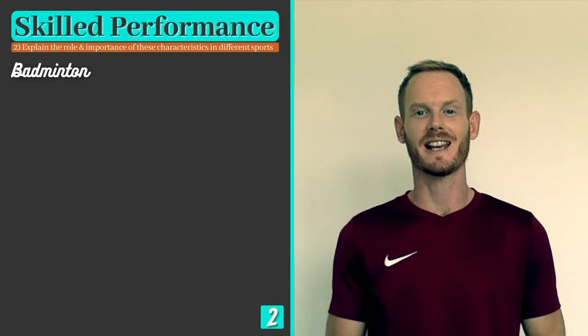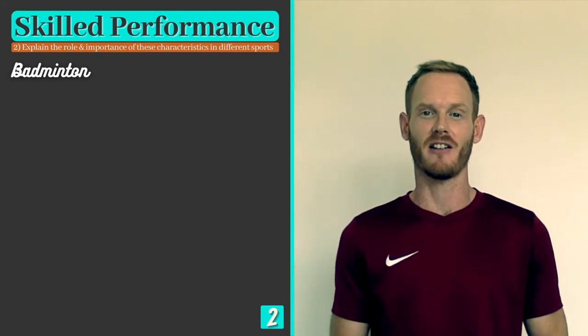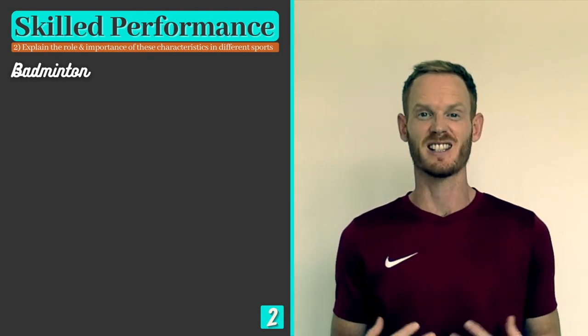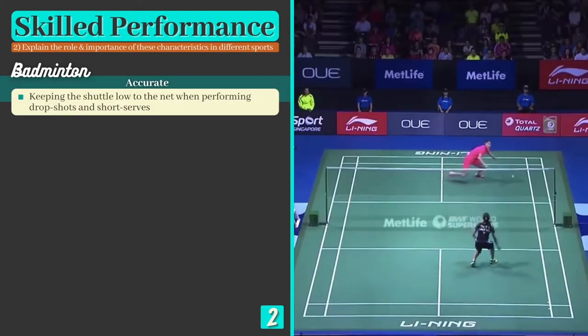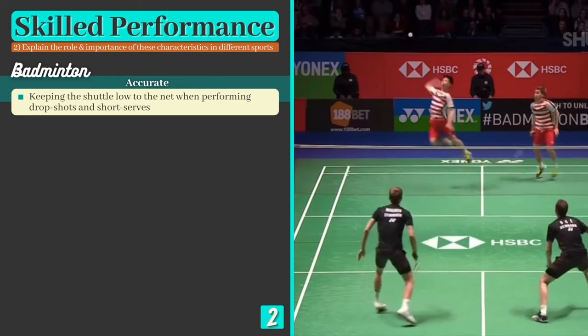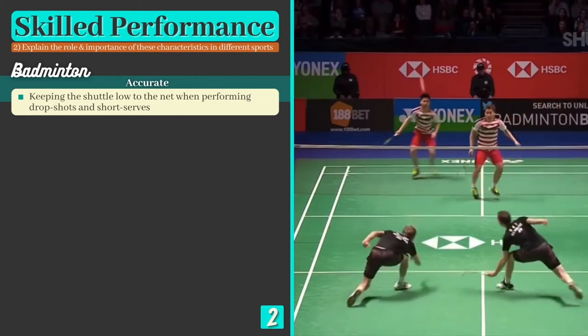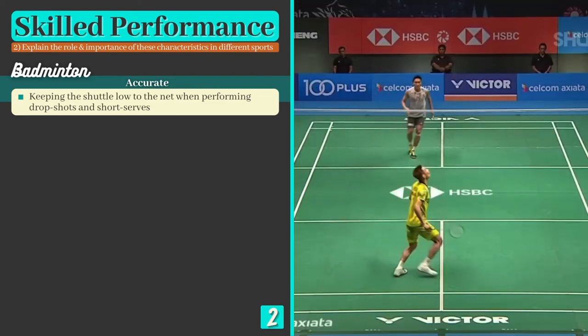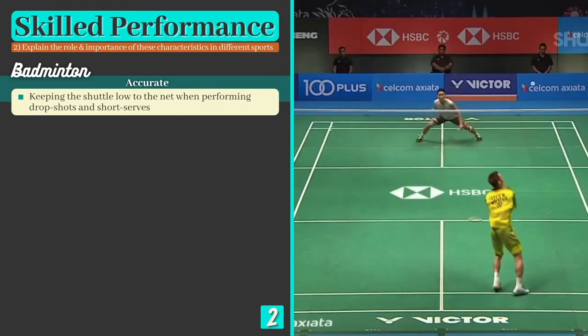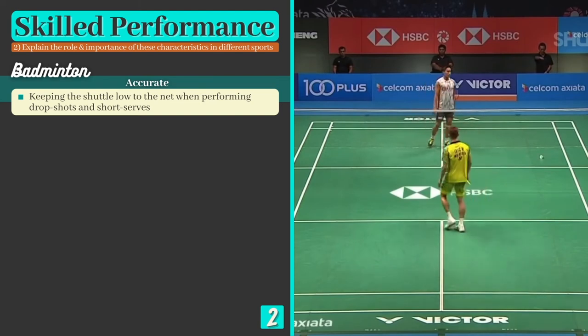Now that we've learned the six characteristics of skilled performance, let's study the role of each characteristic for a single example from sport: badminton. Accuracy is essential when performing drop shots, as too much height and pace could allow your opponent to smash the shuttle before it drops below the height of the net, while too little pace and it may not clear the net at all.